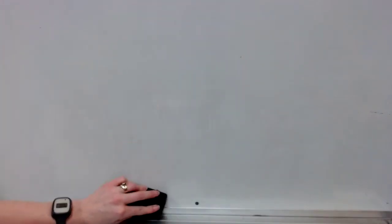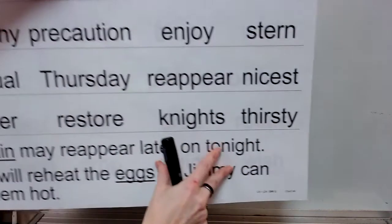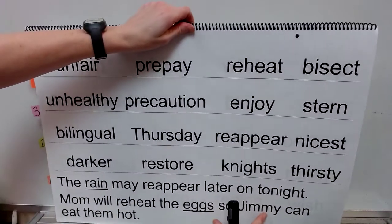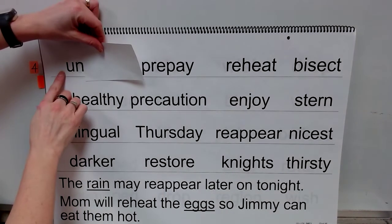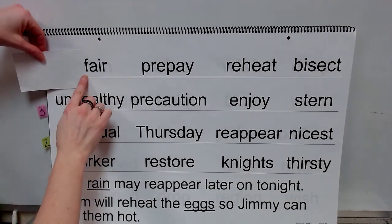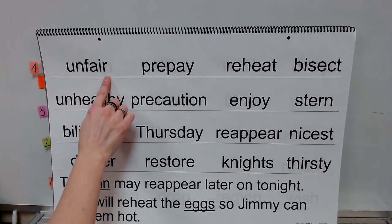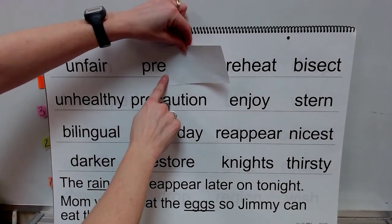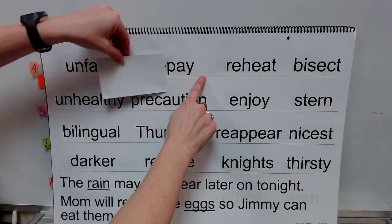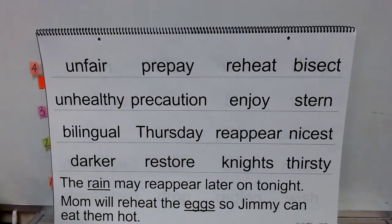Now let's read some words. Prefix: un. Base word: fair. Word: unfair. Prefix: pre. Base word: pay. Word: prepay.